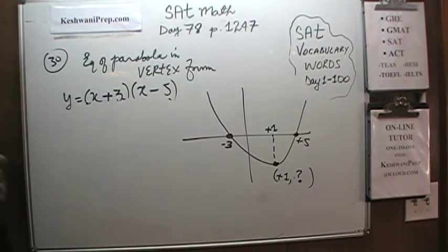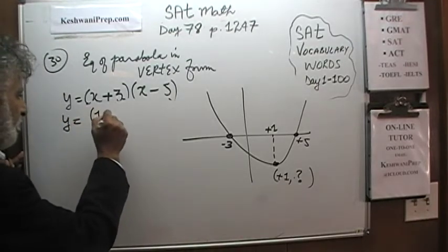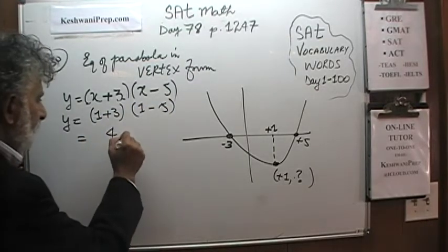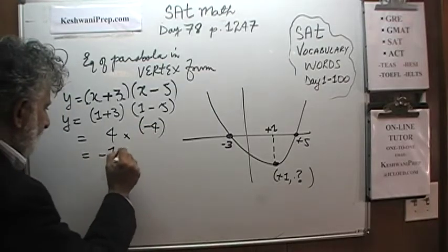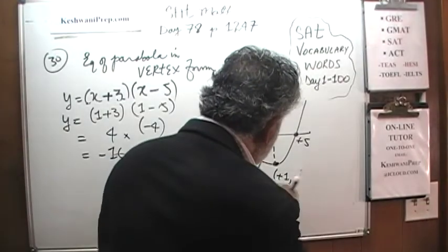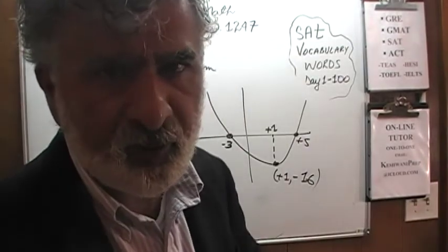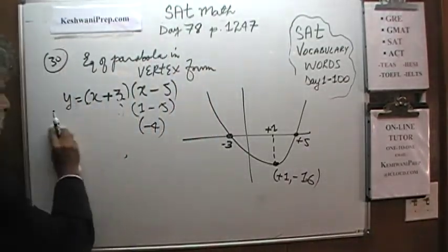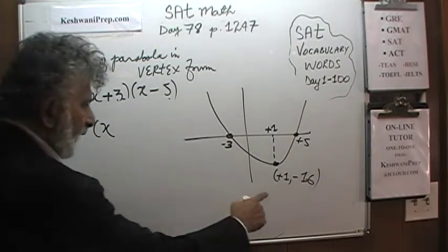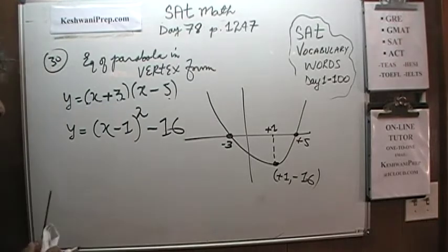We already know the x-coordinate of the vertex is 1. To find the y-coordinate, we plug x equals 1 into our equation: (1 plus 3) times (1 minus 5) equals 4 times negative 4 equals negative 16. So the vertex is at (1, negative 16). Once we know the vertex coordinates, we can write the equation in vertex form: y equals (x minus 1) squared minus 16.